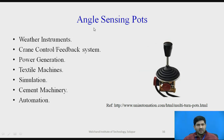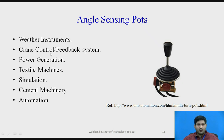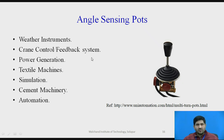Angle sensing pots — the best example is a joystick. These find application in weather instruments, crane and forklift joystick controls, power generation equipment, textile machines, simulation, cement machinery, and automation — essentially wherever joystick control is involved, you will find angle sensing pots.